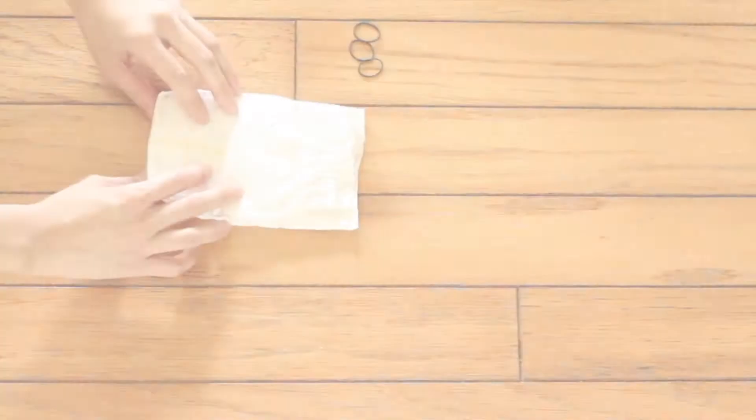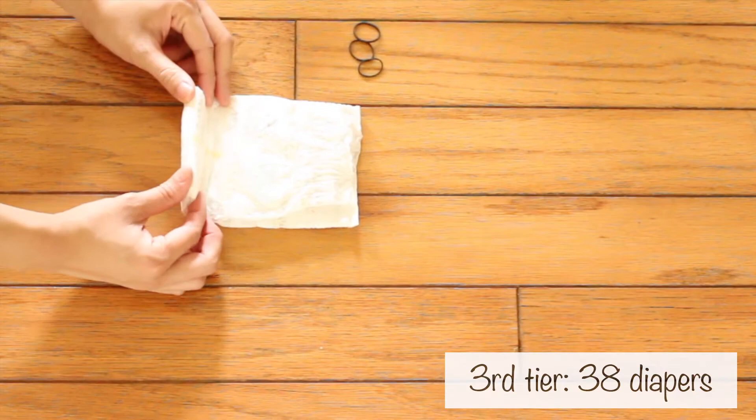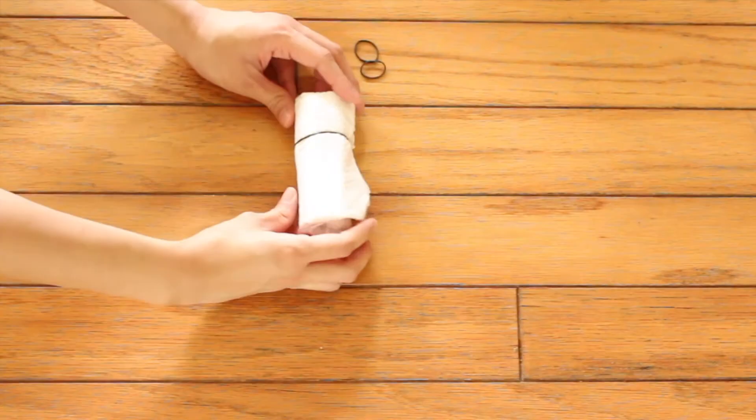For the 3rd tier, you'll need 38 diapers in total. To make the first round, you'll need 6 diapers. Roll a diaper starting from the folded side and place a hair tie a 3rd up. Roll and tie 6 diapers going in the same direction.